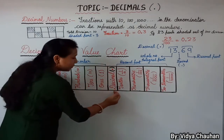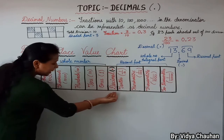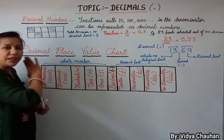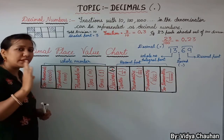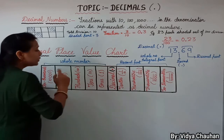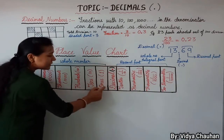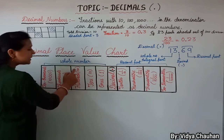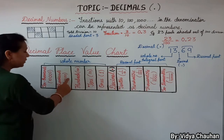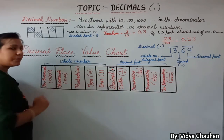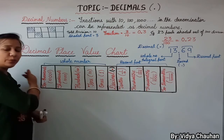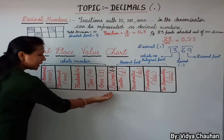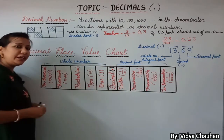On the left hand side the place value chart is similar to our previous Indian place value chart. We have ones (1), tens (10), hundreds (100), thousands (1000), ten thousands (10,000), and further lakh, ten lakh, crore, ten crore, and so on. This portion is the same as the Indian place value chart.